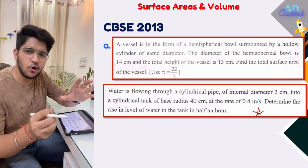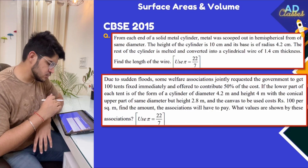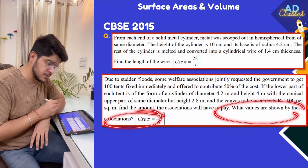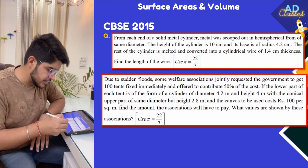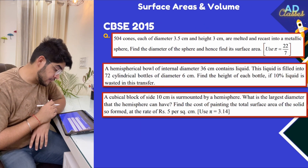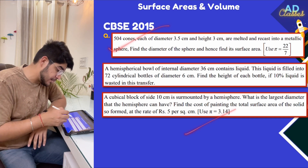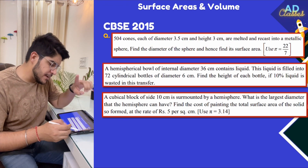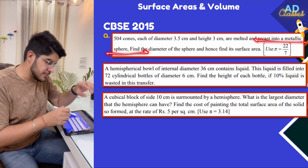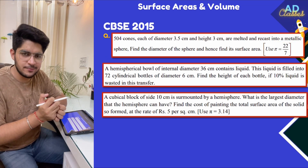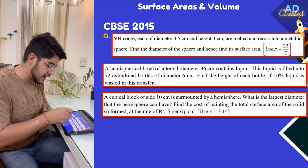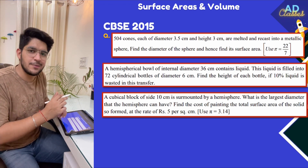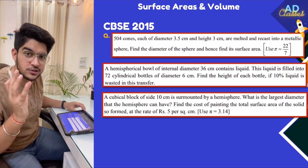Next are the 2014 and 2015 questions. The value-based questions can be ignored. In the 2015 question, you are given the diameter and height of a metallic object which is melted and recast into a metallic sphere. Find the diameter of the sphere and hence find the surface area of the sphere. It is a calculation-based question.